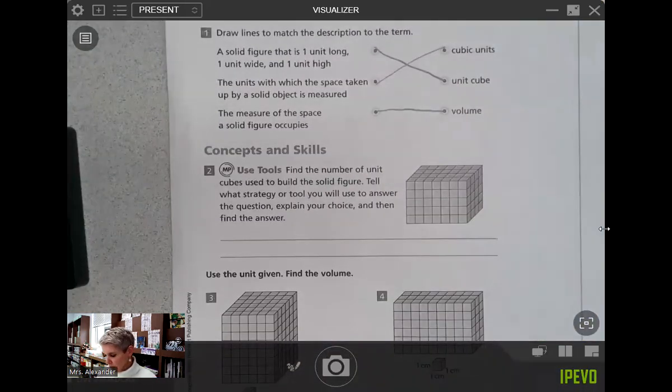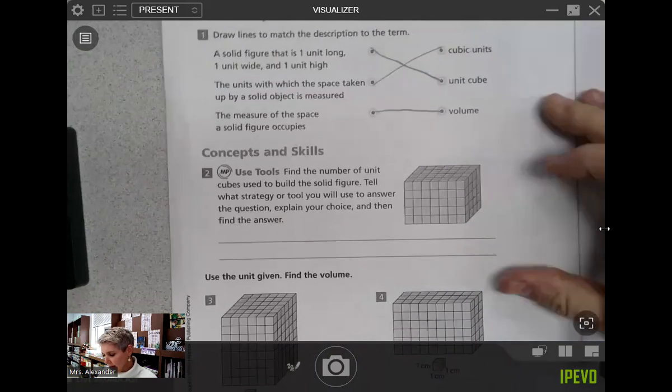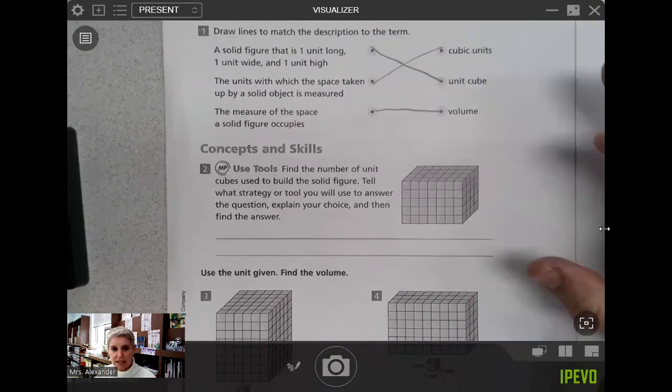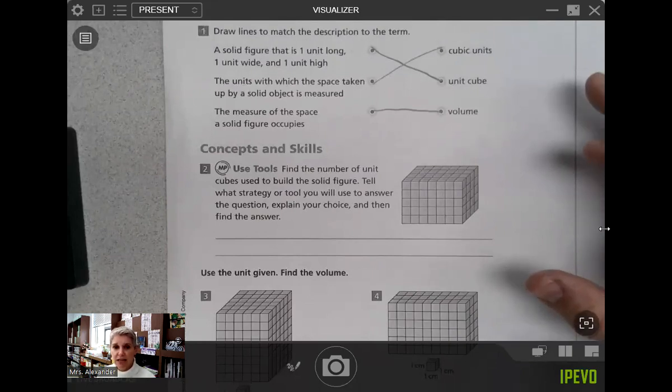The next part, number two, says find the number of unit cubes used to build the solid figure. Tell what strategy or tool you will use to answer the question, explain your choice, and then find the answer. So find the number of unit cubes used to build this solid.